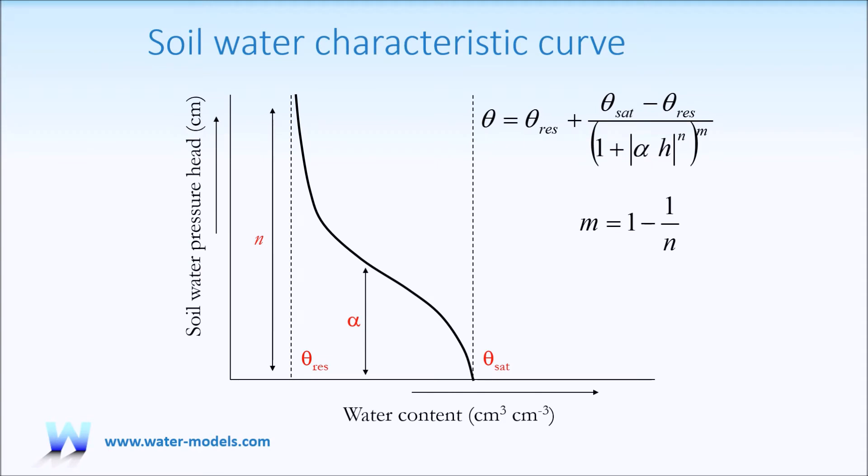The soil-water characteristic curve relating the soil-water content and soil-water pressure has an S shape, which is well-captured by the Van Genuchten model. This model has several parameters: the saturated and residual water content and the alpha, N, and M parameters. M and N are actually related.